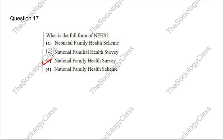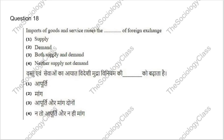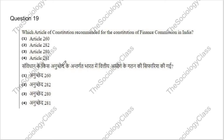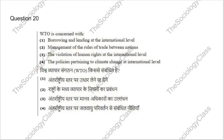Question 17: NFHS full form — the correct answer is option 3, National Family Health Survey. Question 18: Imports of goods and services raises the dash of foreign exchange — options: supply, demand, both, neither. The basics of social science up to Class 12 are important. The correct answer is B — demand.